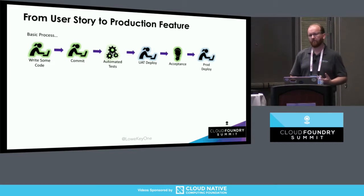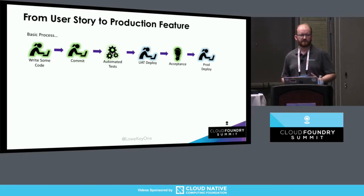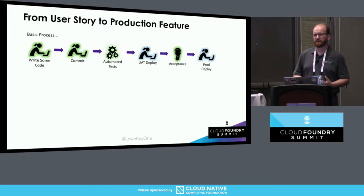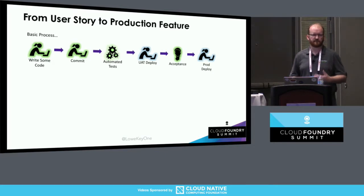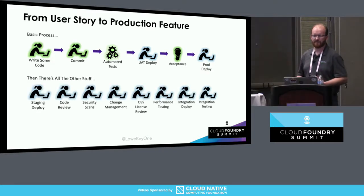Thinking about what it takes to actually get code from the initial idea out to production: in a base case, you write some code, you do a commit, you have some automated tests, someone does a deployment. If you're into true CI/CD, then your acceptance is completely automated, but maybe you have someone like me standing there doing acceptance, and then you push out to production. That's kind of the simple workflow, but the reality is there's all that other stuff that people are spending time doing as well.